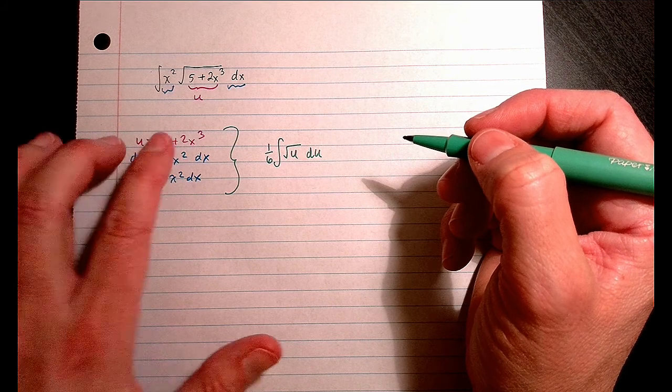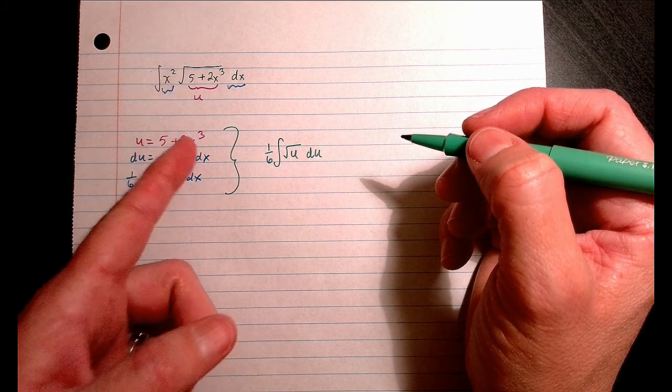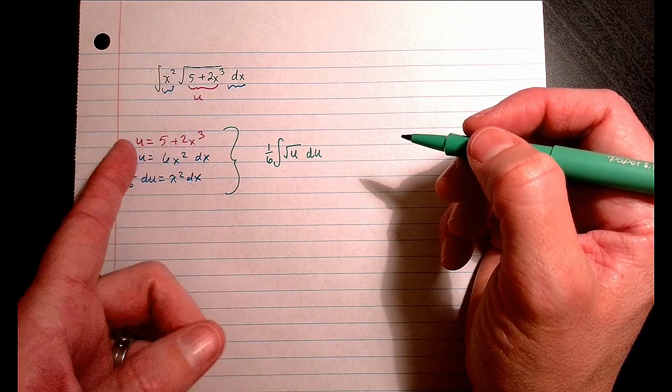The reason this works is, remember, when you have an equation, you're saying both these sides are equal. That means in place of one, you can write the other.